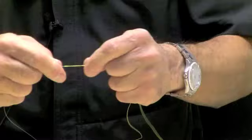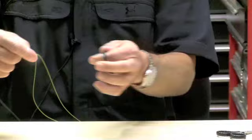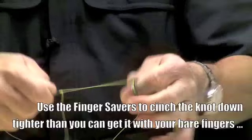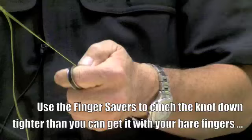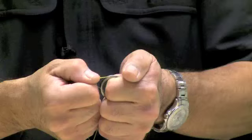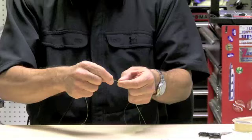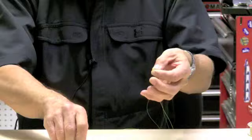Hold the fluorocarbon line, both lines together as if they were one and I'm going to take the feature tool which is the finger saver and wind the main line and cinch. Then we're going to take the tag end, repeat the process and as you can see it eliminates the line cuts on the finger and speeds the knot tying process up.